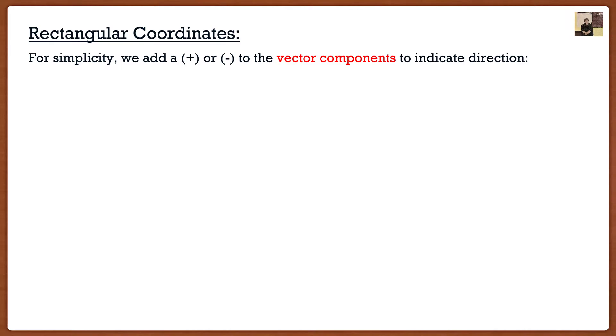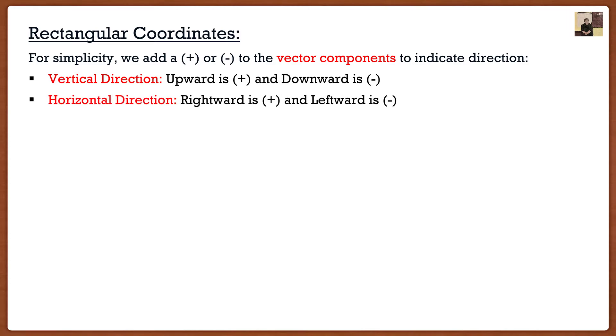So since we only need two things to define these components, we simply add a positive or negative sign to these vector components to indicate their direction. For the vertical direction, we can only go up or down. So a vector going upwards is positive and a vector going downwards is negative. Similarly, for the horizontal direction, we define going right as positive and going left as negative. For these components, we simply made complex vectors that rely upon angles into simple magnitudes that can be just positive or negative. Whether it's positive or negative, you will know which direction it's going.